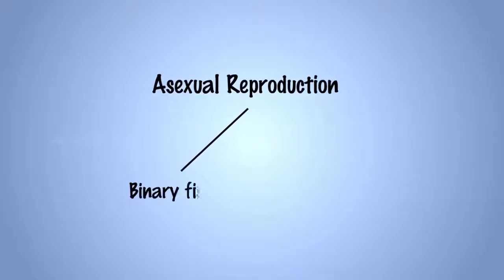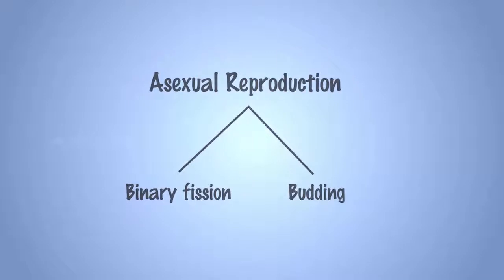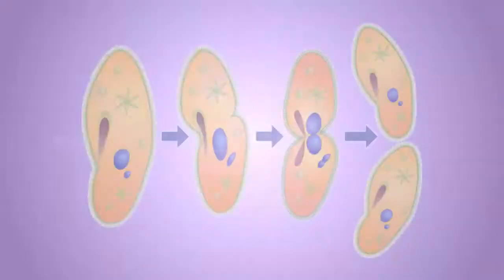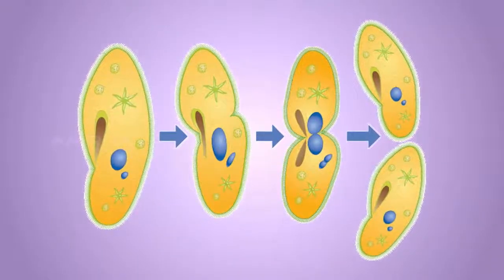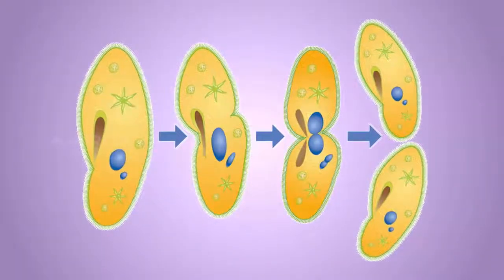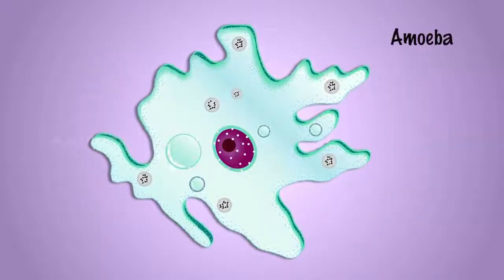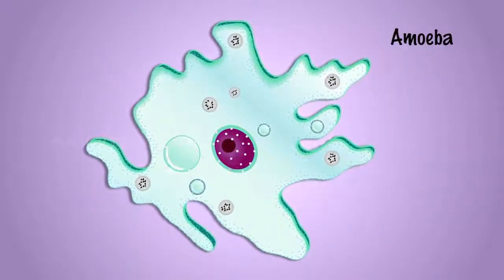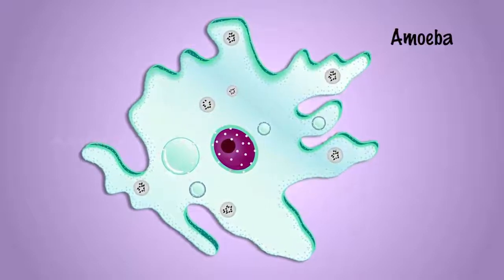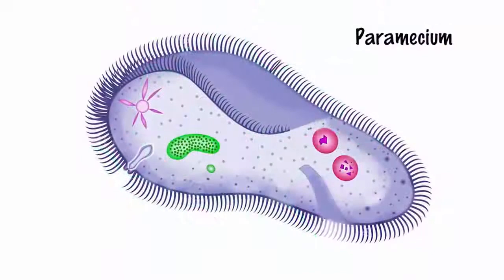Binary fission and budding are two common methods of asexual reproduction. In binary fission, two organisms are formed from a single parent. This mode of asexual reproduction is found in unicellular organisms such as amoeba and paramecium.